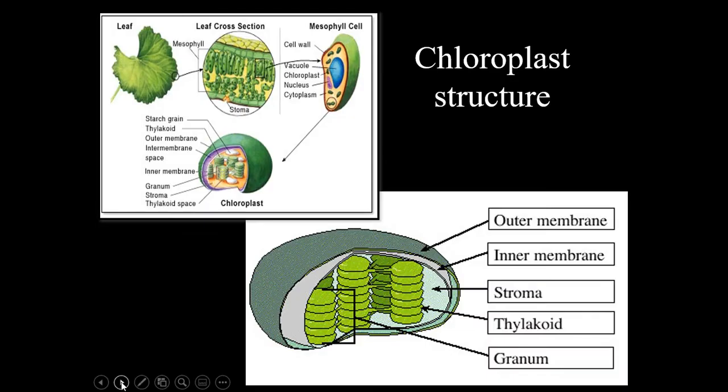Chloroplasts are the organelles specialized for photosynthesis. A chloroplast has two membranes: the outer membrane and the inner membrane, surrounding the liquid in its interior called the stroma.